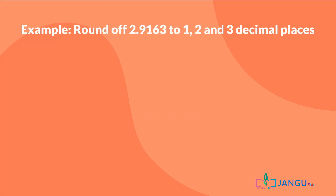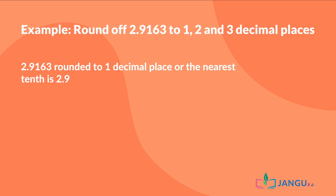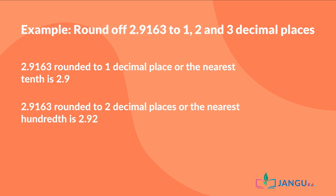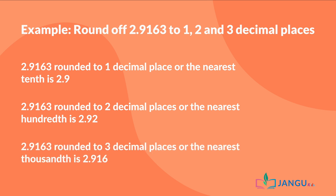Let's take a look at one example. Round 2.9163 to one, two, and three decimal places. 2.9163 rounded up to one decimal place, or the nearest tenth, is 2.9, because nine is followed by one and one is less than five. 2.9163 rounded up to two decimal places, or the nearest hundredth, is 2.92, because one is followed by six and six is greater than five. 2.9163 rounded up to three decimal places, or the nearest thousandth, is 2.916, because six is followed by three and three is less than five.